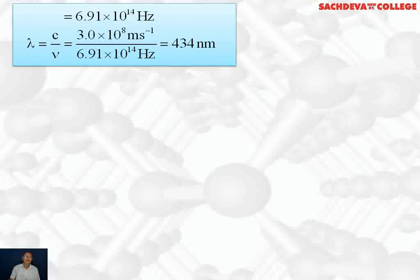If we want to find out wavelength, the formula applicable will be λ = c/ν. c is 3×10⁸ m/s divided by frequency 6.91×10¹⁴ Hz. The answer comes out to be 434 nanometers.